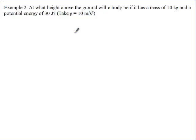At what height above the ground will a body be if it has a mass of 10 kg and a potential energy of 30 joules? So we know our PE, PE is equal to 30, our mass is equal to 10, and then g was given to be 10.